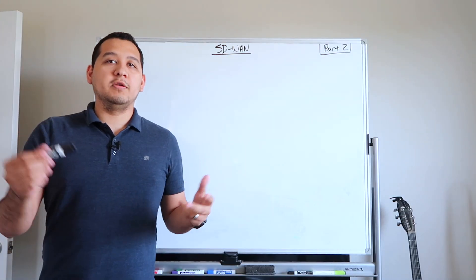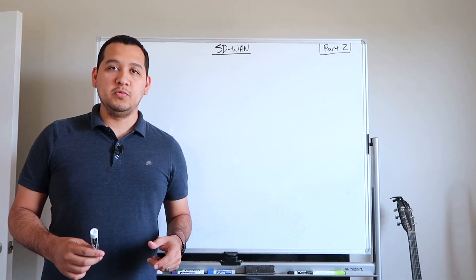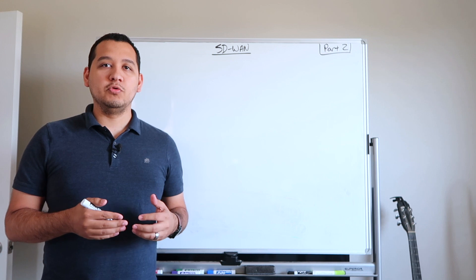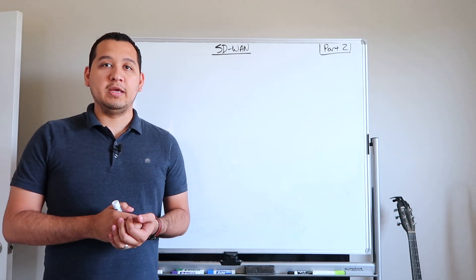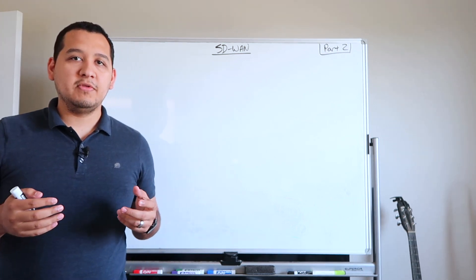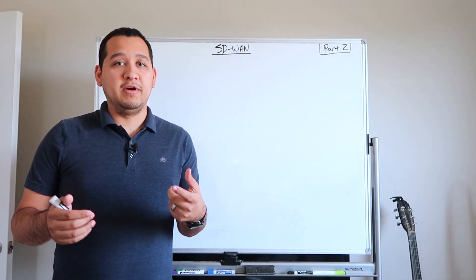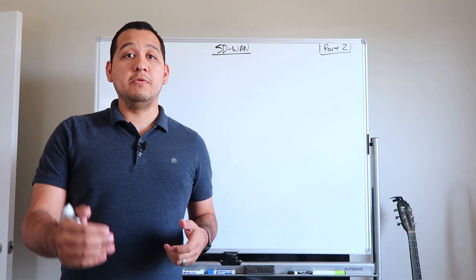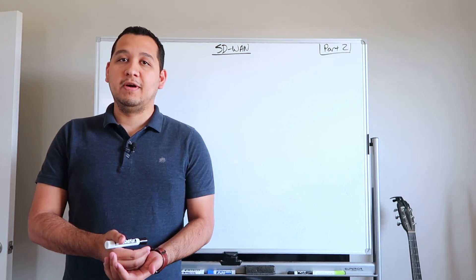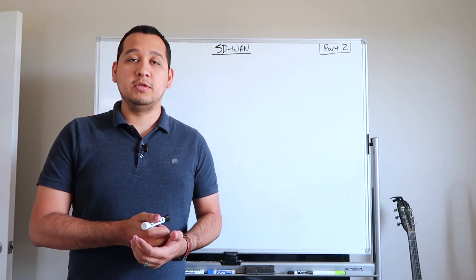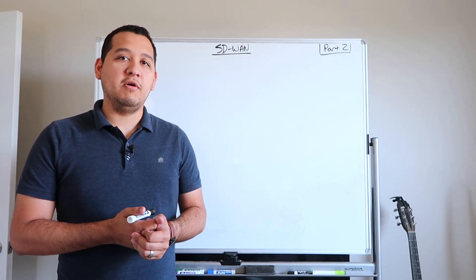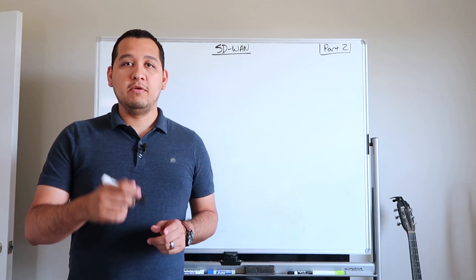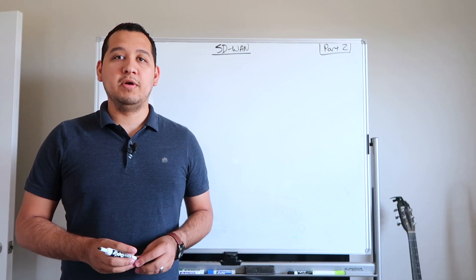I'm gonna start this discussion by discussing the differences between the control plane and the data plane, because this is what truly defines what software-defined networking is. It's often misrepresented to say that software defined networking means that it's all done through a GUI. GUI does not equal software defined, and that's something very important to illustrate. What defines that is based on the control plane and the data plane and the separation of those things.